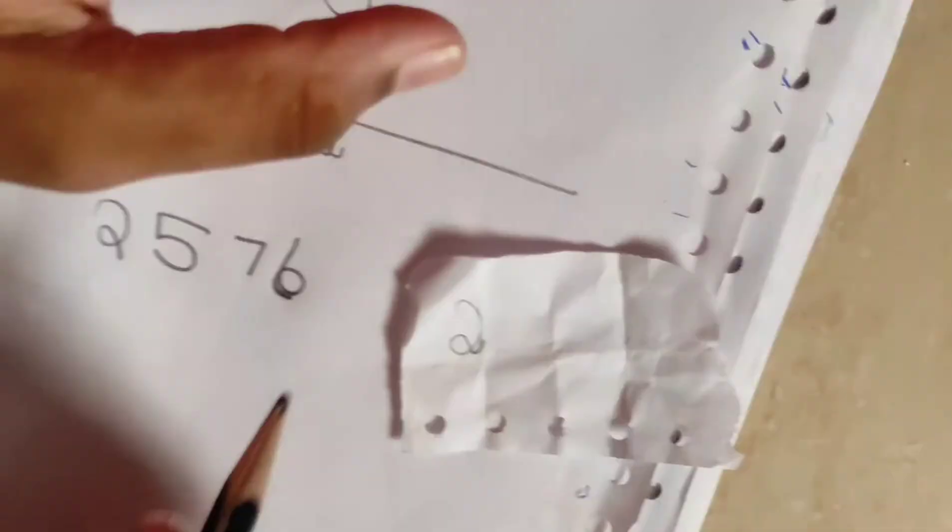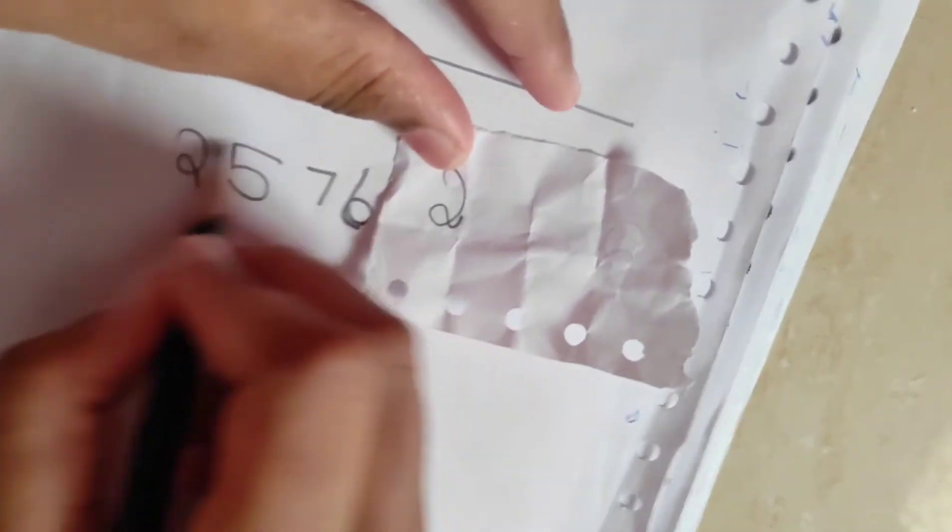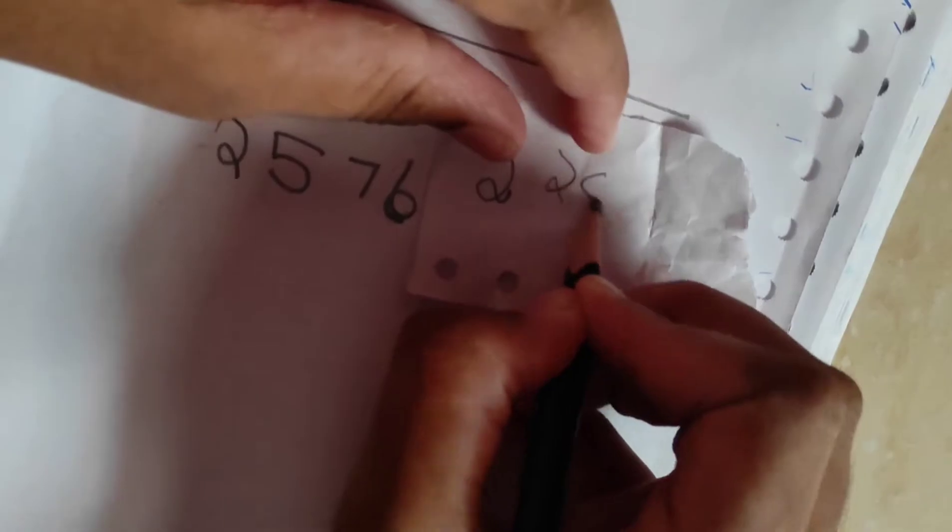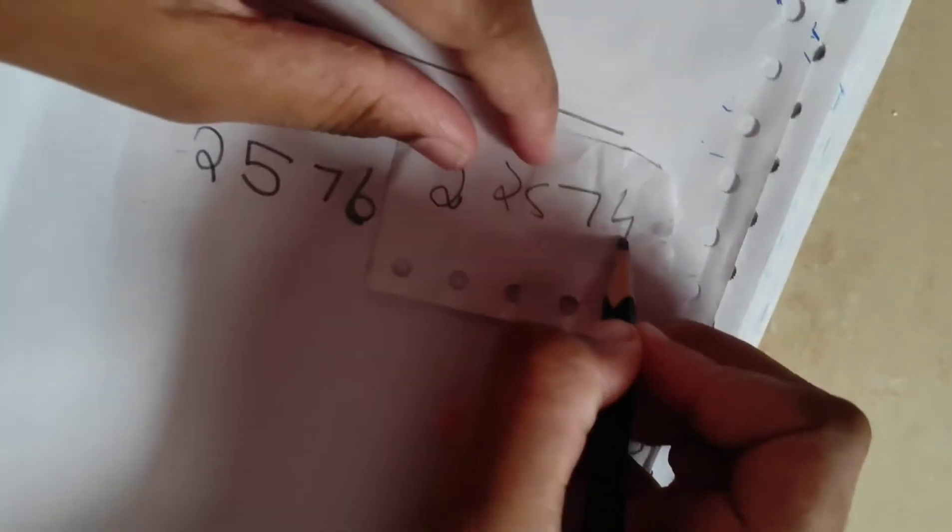Then, if this number is above 2 or equal to 2 or more than 2, then you write the first 3 digits like that. 2, 5, 7. And then from this, you need to subtract 2 and write.